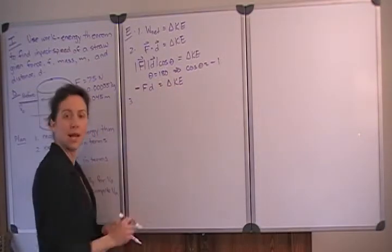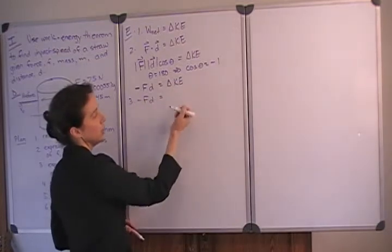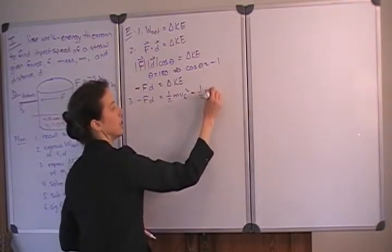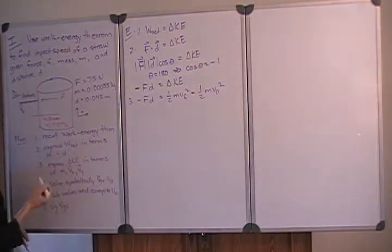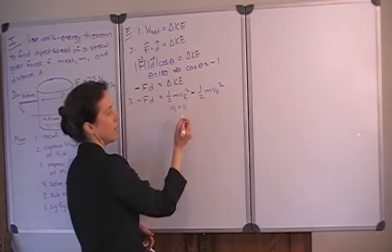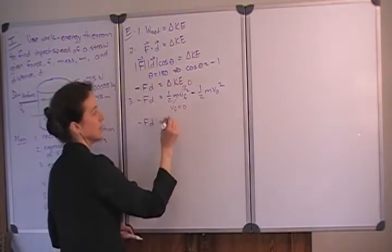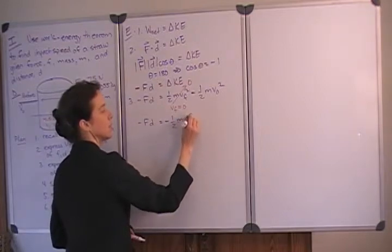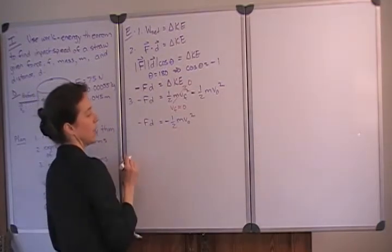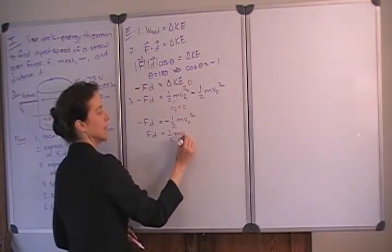The right-hand side expresses the change in kinetic energy: final kinetic energy (one-half times mass times final velocity squared) minus the initial kinetic energy. Since the final velocity is zero, that term goes to zero. Our expression simplifies to negative force times distance equals negative one-half the mass times the initial velocity squared. Multiplying both sides by negative one gives us: force times distance equals one-half the mass times the initial velocity squared.